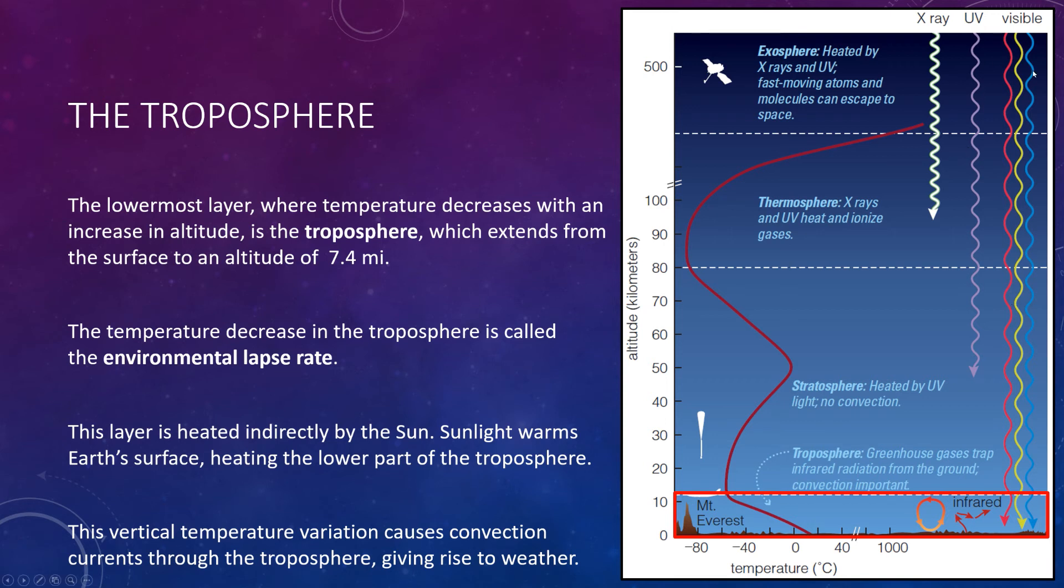Sunlight comes all the way in as you can see in the far right. The visible light strikes the surface and leaves as infrared. But because of greenhouse gases, it's trapped here, and so at the surface we have it being very warm and the further away you get the cooler it is. This vertical temperature variation causes convection currents throughout the troposphere which gives rise to weather. The primary cause of storms is the churning of air by convection in which warm air rises and cool air falls. Recall that convection occurs only when there is strong heating from below. In the troposphere, the heating is from the ground which can drive the convection cells.